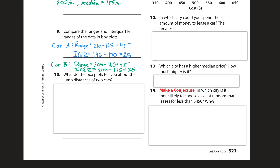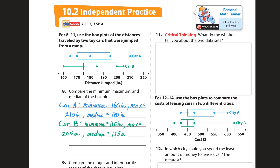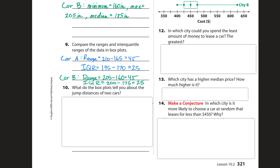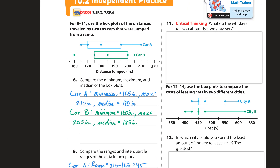Number ten asks what the box plots tell you about the jump distances of the two cars. Overall, car A jumped a lesser distance than car B. Car B has a greater median than car A, and the two cars have the same variability since the IQR is the same for both. Overall it looks like car B jumped farther — 75% of the data is higher, with only 25% on the lower end.